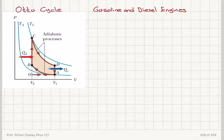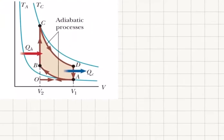The cycle consists of four steps. Starting from point A, we have an adiabatic compression from V1 to V2. From point B to point C, we have an isovolumetric process. From point C to point D, we have an adiabatic expansion, and from D to A, another isovolumetric process. As you can see, we are going in between two isotherms TA and TC.